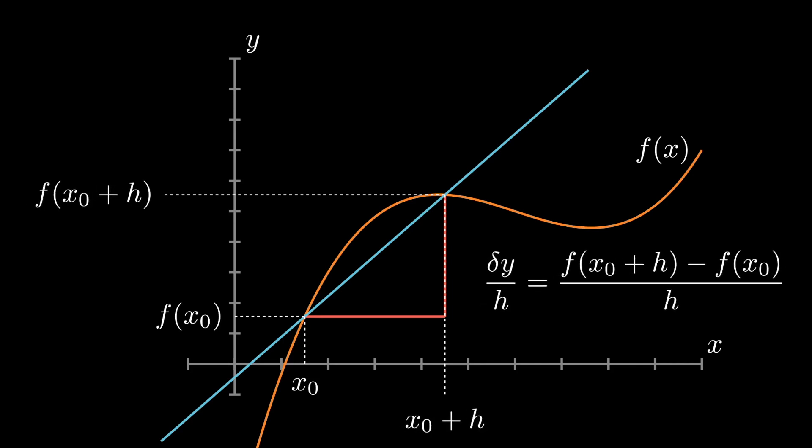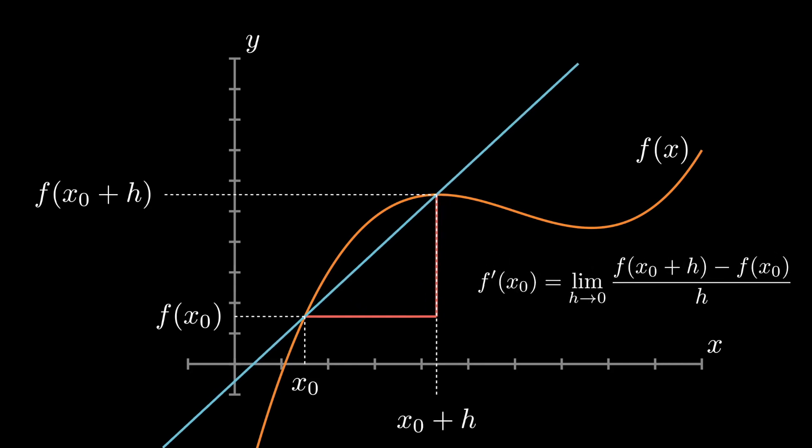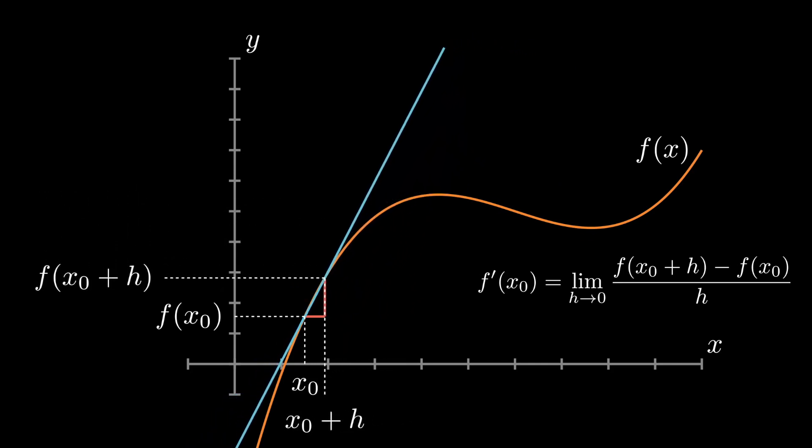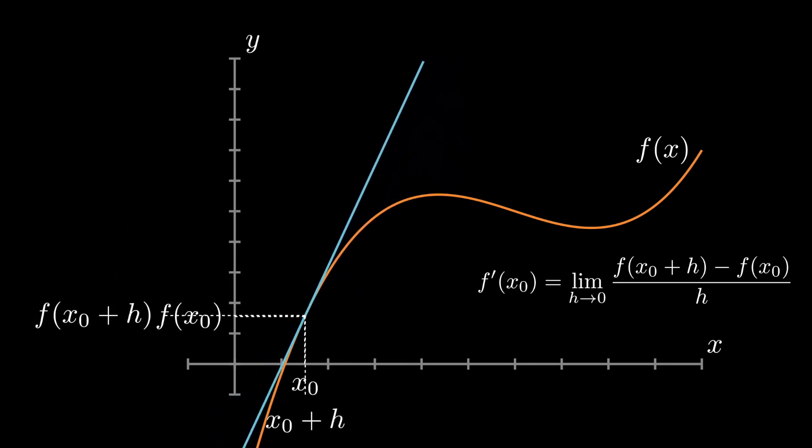When talking about derivatives, however, it's conventional to use h instead of delta x. The derivative at x0 is the limit of that difference quotient as the change in x goes to 0. The secant line becomes a tangent at the point x0 and its slope is the value of the derivative.